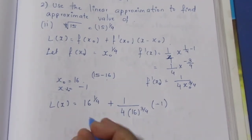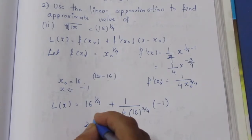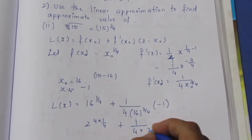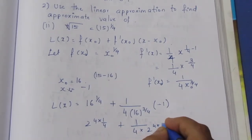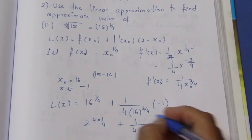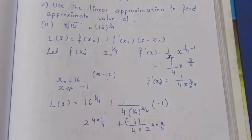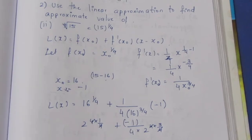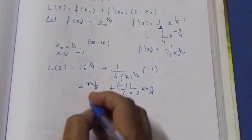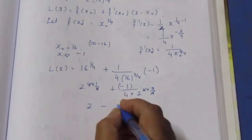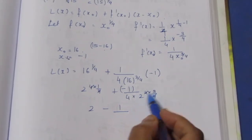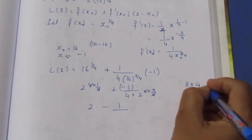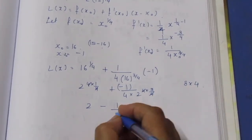So we get 2 to the power 4 equals 16, giving us 2 plus 1 by 4 times 2 to the power negative 3 times minus 1. The 4 in the denominator cancels, giving 2 minus 1 over (2 cubed times 4). 2 cubed is 8, and 8 times 4 is 32. So the result is 2 minus 1 by 32.